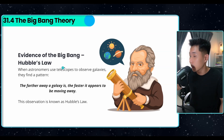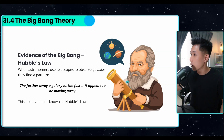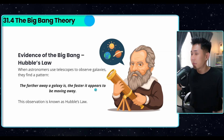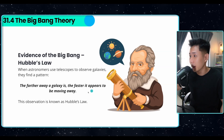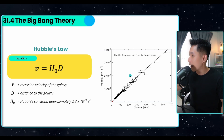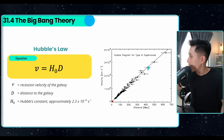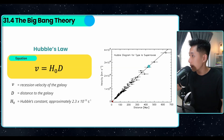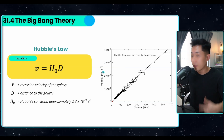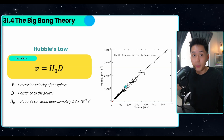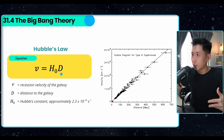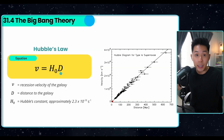The first piece of evidence is Hubble's Law. When astronomers used telescopes to observe galaxies, they found that the farther away a galaxy is, the faster it appears to be moving away. This observation is known as Hubble's Law. The graph shows that stars and galaxies further away from us have a higher recession velocity. Scientists plotted all the points, drew a line of best fit, and this gives the equation used to estimate the age of the universe.